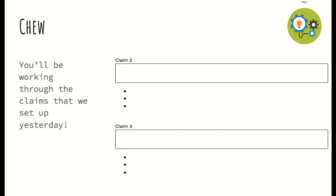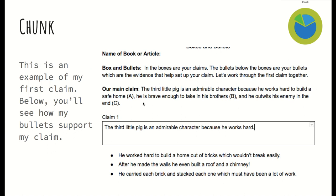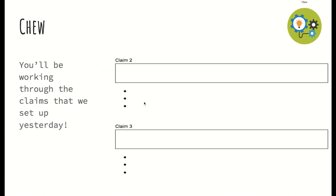For your CHU, you'll be working through the claims that we set up yesterday. Make sure to put the claims in each of these boxes. Then after you have put the claims in the boxes, you will use these three bullet points as your evidence to set up your claim. He is brave — you're going to name three reasons why he is brave. Then for this last one, you're going to explain how he outwitted the wolf, and that will be located here. If you have any questions, please feel free to email me.